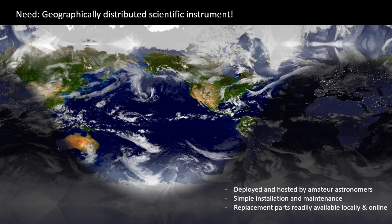What we really need is a geographically distributed scientific instrument to facilitate deployment and keep costs low. Our systems are hosted and deployed by amateur astronomers, usually in their houses. The installation is simple and the maintenance is simple too. We make sure that replacement parts for our cameras are readily available locally or can be bought online very cheaply.